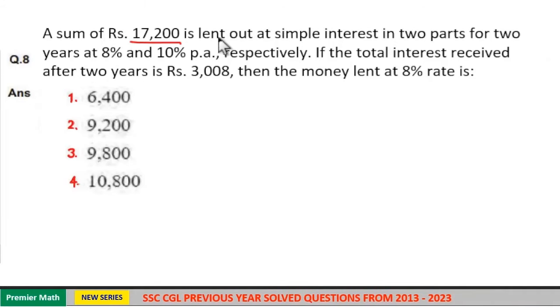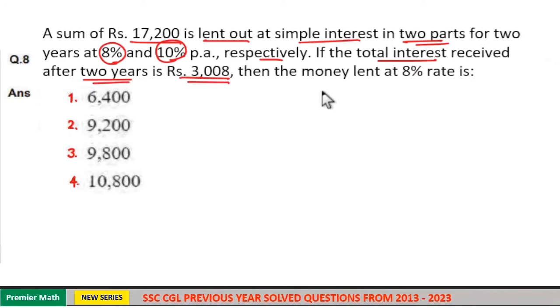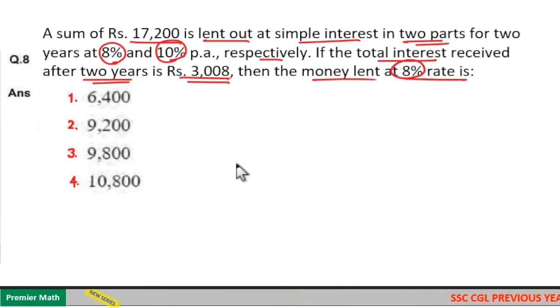A sum of Rs. 17,200 is lent out at simple interest in two parts for two years at 8% and 10% per annum respectively. If the total interest received after two years is Rs. 3,008, then the money lent at 8% rate is?